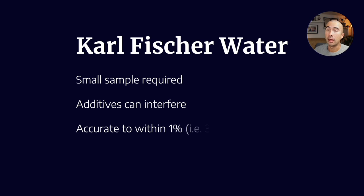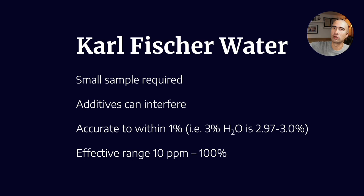But despite that, it's generally accurate to within about 1%. So as an example, if we measured 3% water, the tolerance on that we're saying is between 2.97 and 3.03%. And the effective range is about 10 parts per million right up to 100% water. So it's a very effective method for measuring very small and very large quantities of water.